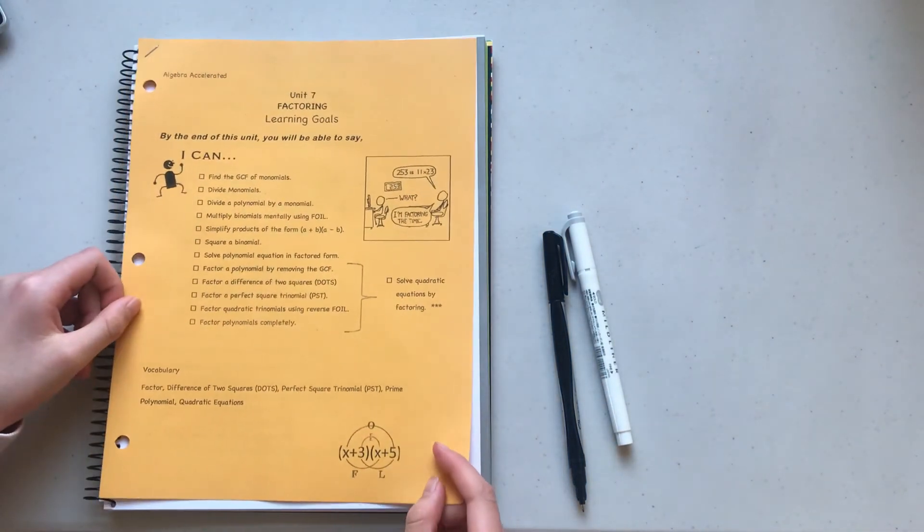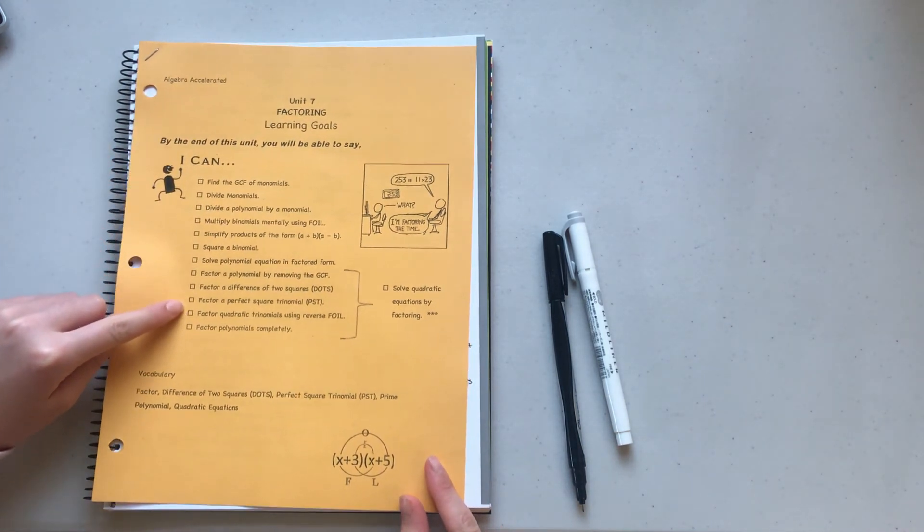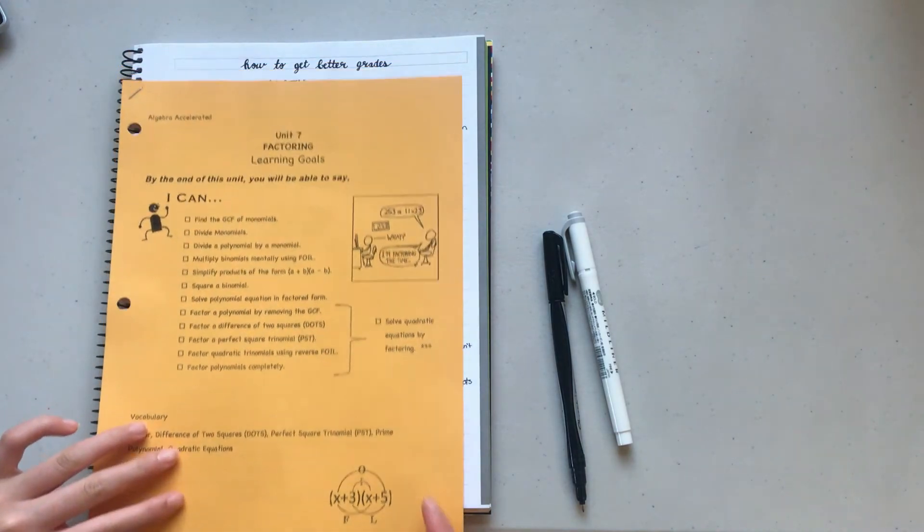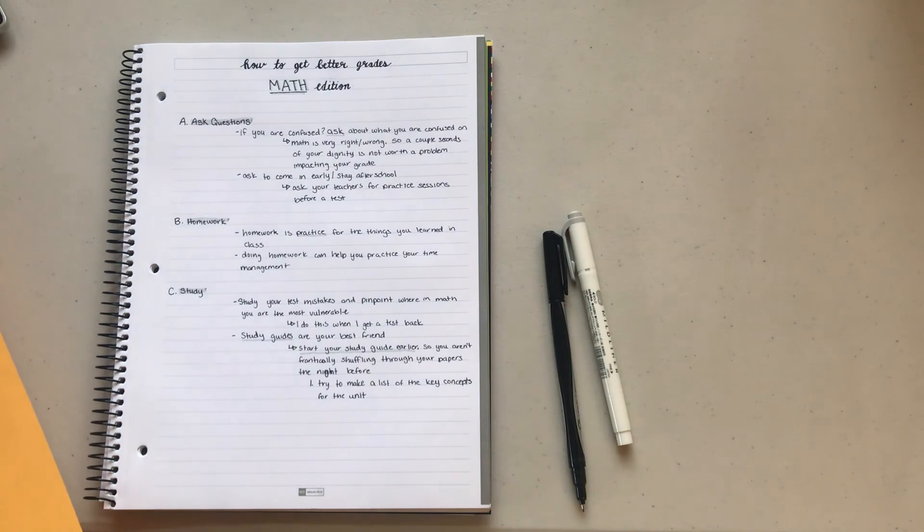Here is a list of the key concepts for unit seven. This one our teacher made, and I just go through that when I make my study guide and check them off as I cover the topics in the study guide.